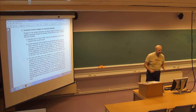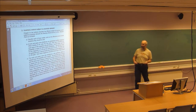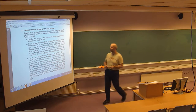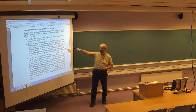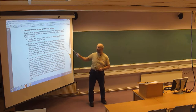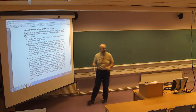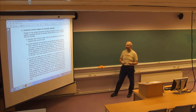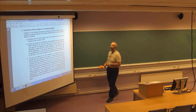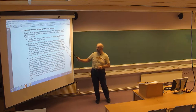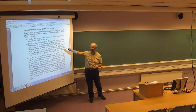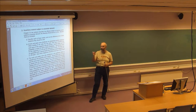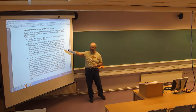Problem two is regarding the uncertain demand models we have seen in the latest lectures. Describe each of these models — both the newsboy model and the lot-size reorder point model — the two different stochastic models we have seen, and point out the differences and in which situations they should be used. Try to point out the main differences and describe briefly when they should be used.